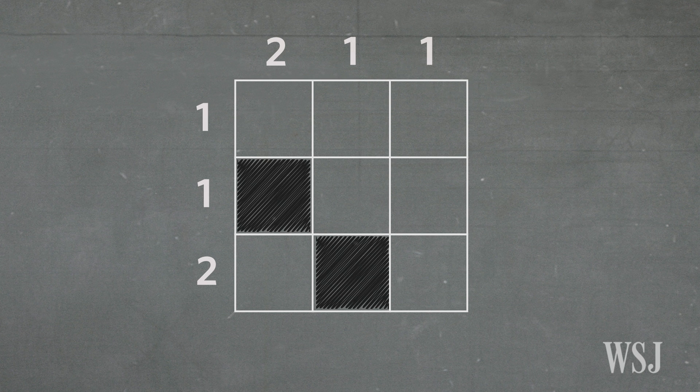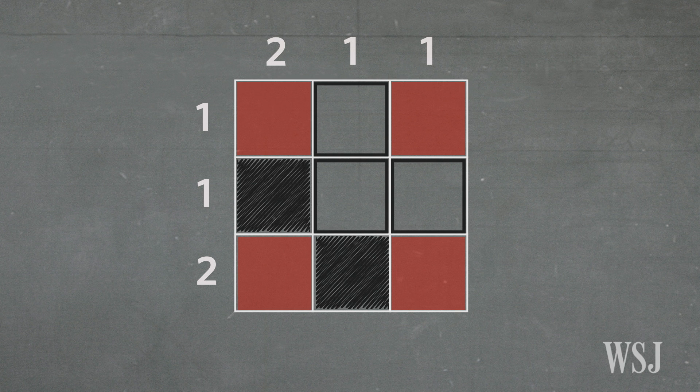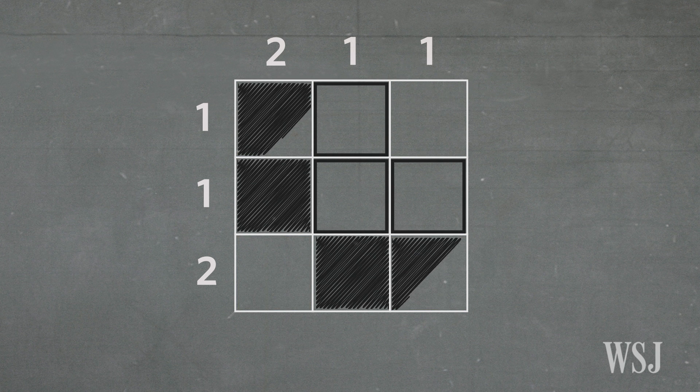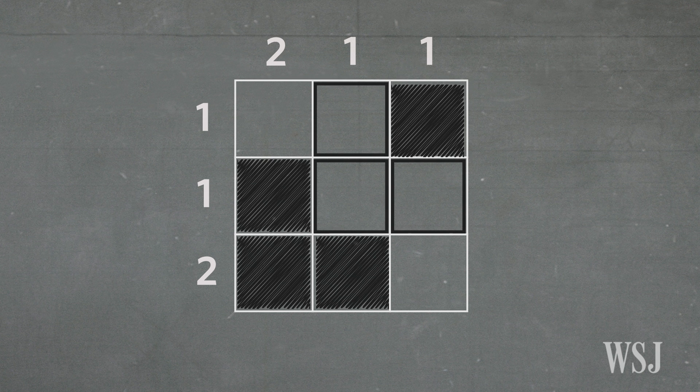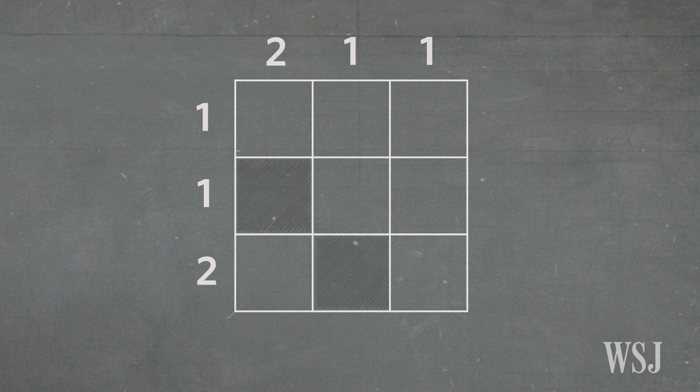But now we've already got the one pixel this calls for here, so this would have to be blank, and this would have to be blank. And we've already got the one dark pixel that this calls for, so this would have to be blank. And now we find ourselves in the exact same situation with these four spots. Either these two would be colored in or these two. Again it's ambiguous, so it's not the unique solution we're looking for.